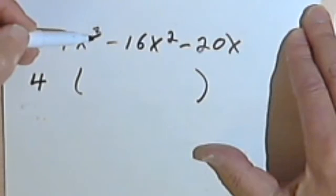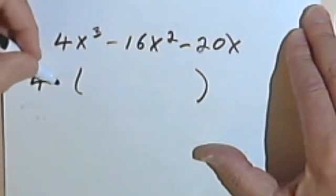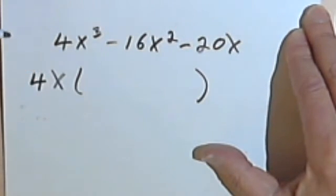And while I'm at it, I see I have an x to the third, an x squared, and an x, so I know I can factor an x out. So let's see what I have left.